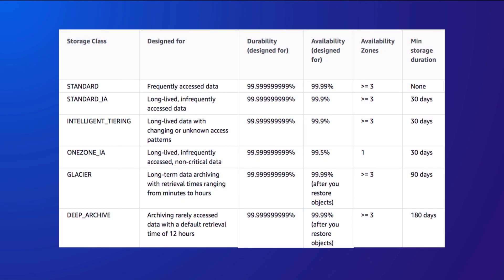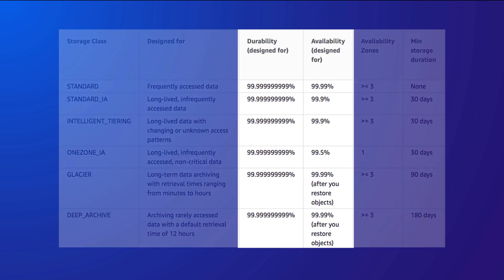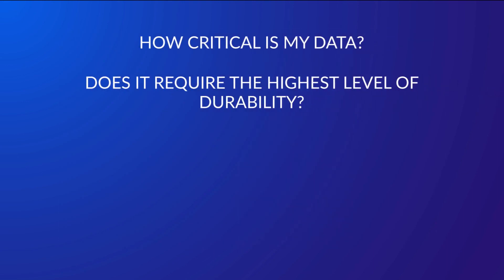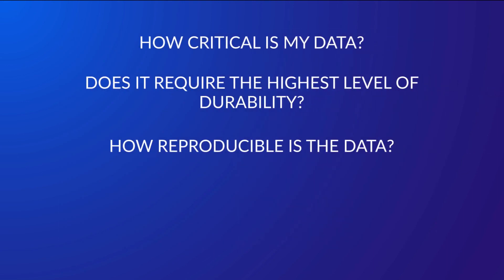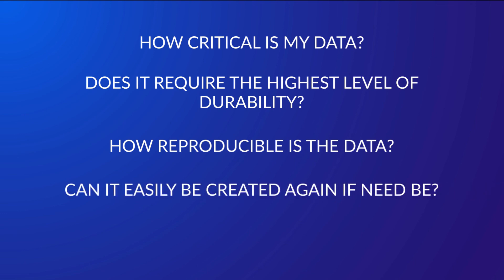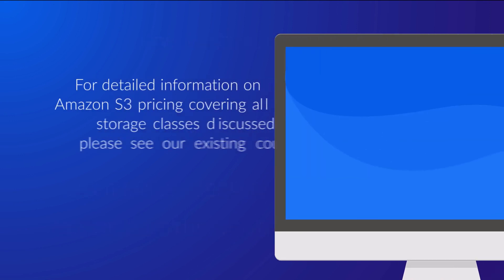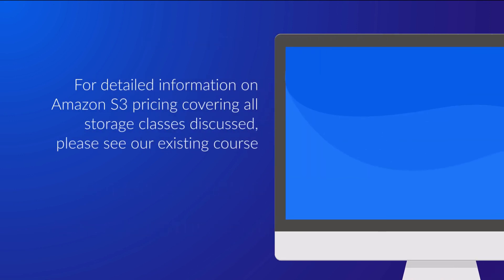To summarise some of the common features between the storage classes, a comparison table clearly shows how they differ. The main differences are the durability and availability percentages, in addition to the pricing. When selecting your class, you need to ask yourself: How critical is my data? Does it require the highest level of durability? How reproducible is the data — can it be easily created again if need be? And how often is the data likely to be accessed? For detailed information on Amazon S3 pricing covering all storage classes discussed, please see the existing course, Understanding and Optimising Costs with AWS Storage Services.